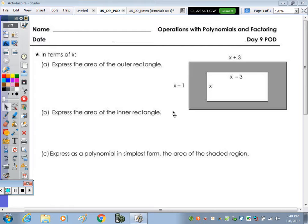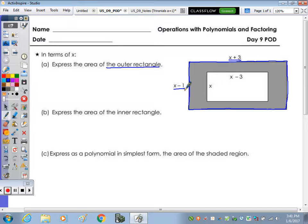So in terms of x, part a, express the area of the outer rectangle. So that's this rectangle here. It gives us the dimensions of our length, x plus 3, and our width, x minus 1.